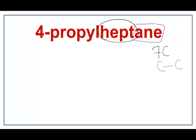Let's draw the longest carbon chain with 7 carbons. A trick to draw these is you always count 1 less than the number of carbons you want to draw: 1, 2, 3, 4, 5, 6. Now let's number these carbons: 1, 2, 3, 4, 5, 6, 7. You have 7 carbons.